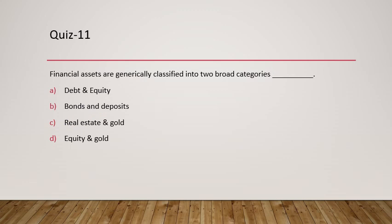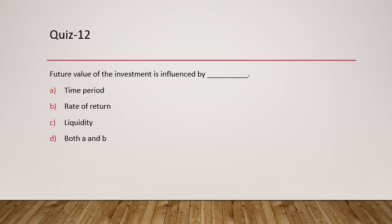Question 11: Financial assets are generally classified into two broad categories. Are they bonds and deposits, real estate and gold, or equity and gold? They are actually classified into two categories: debt and equity.